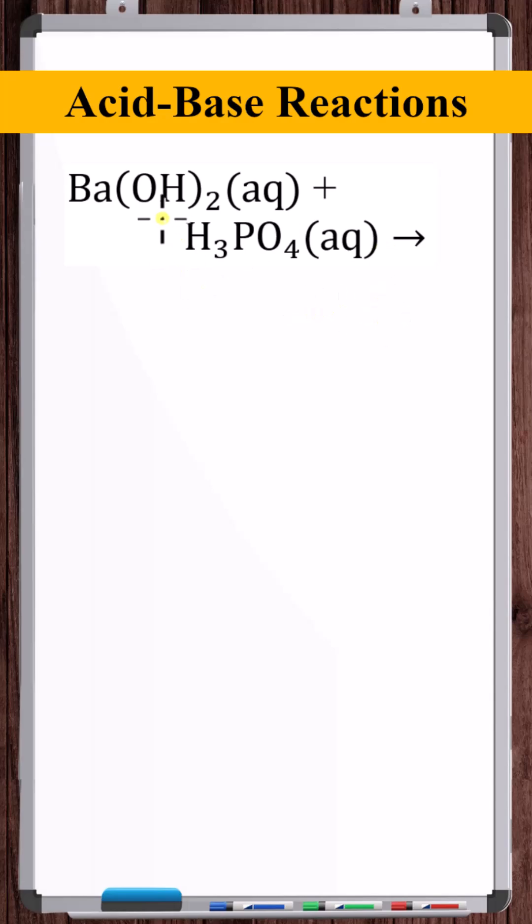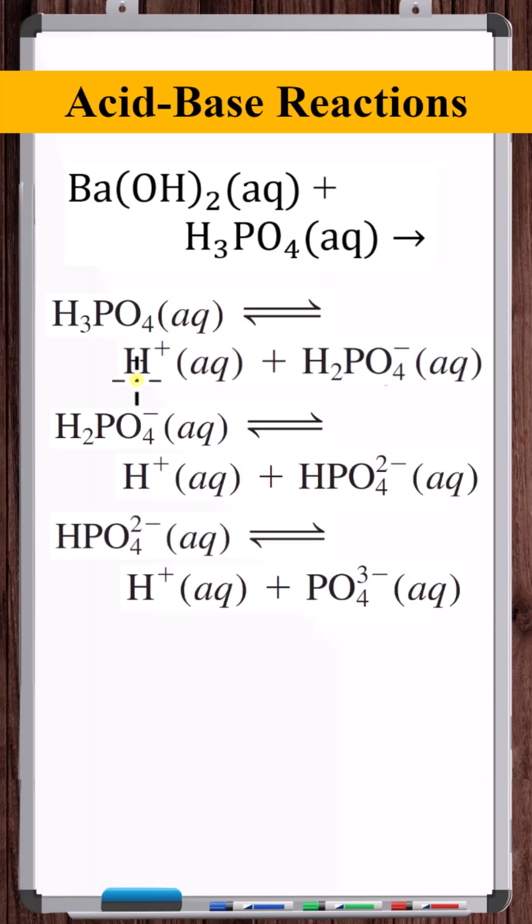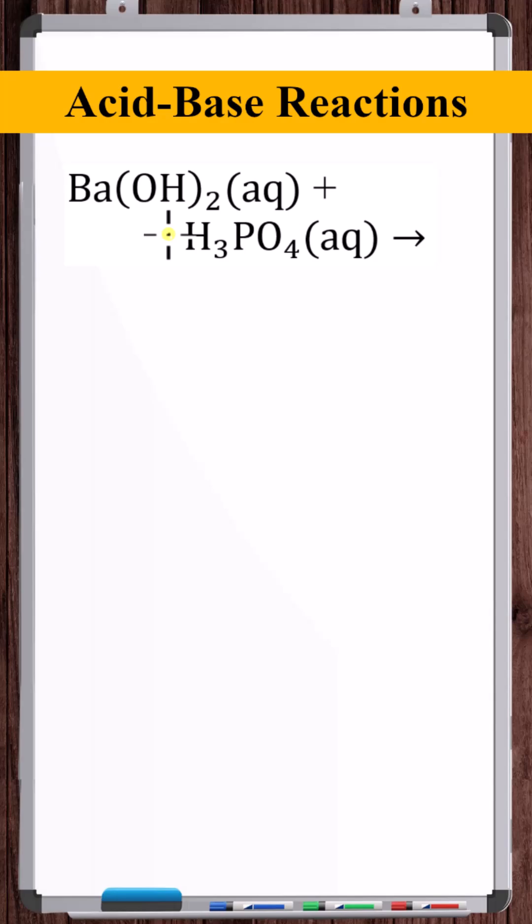To identify the salt, we look at the cation associated with the base, in this case Ba²⁺, and the anion associated with the acid. Phosphoric acid is a triprotic acid, so it breaks up to form three protons and two additional acids in solution, but we're just going to consider the fully ionized form of phosphoric acid, the PO₄³⁻ phosphate ion. So we've got Ba²⁺ ions interacting with PO₄³⁻ ions to produce the salt, Ba₃(PO₄)₂ barium phosphate.